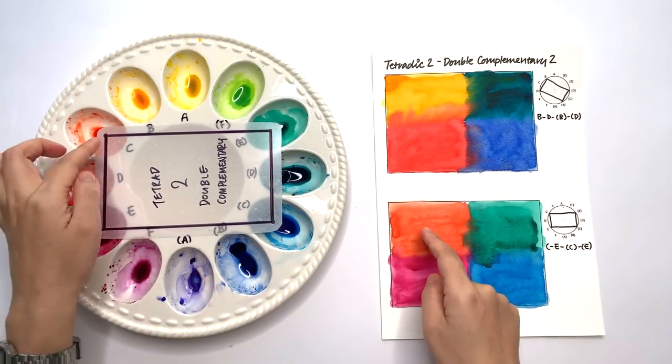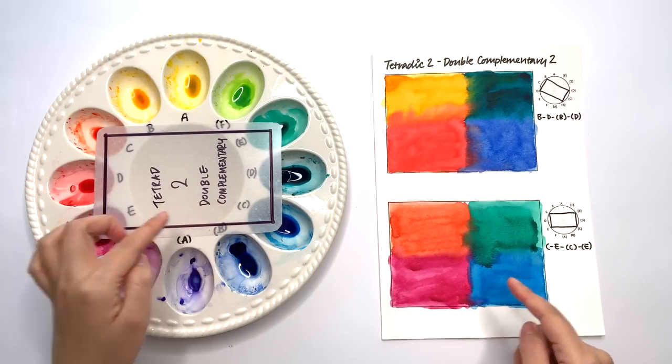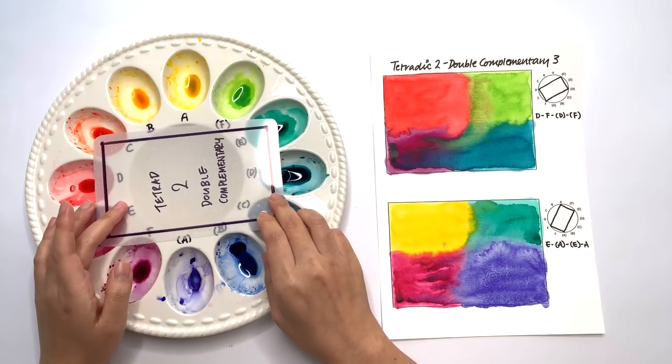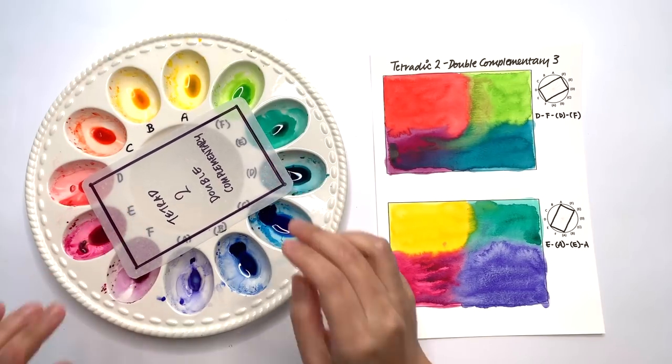And we get the C pairs as well as the E pairs. And then we move across one more well.